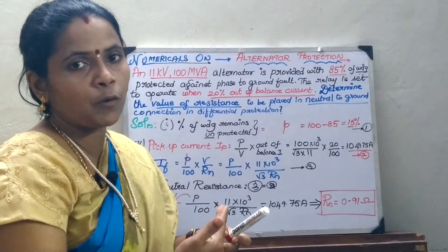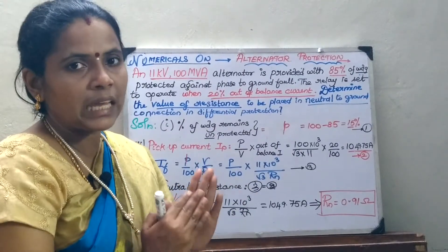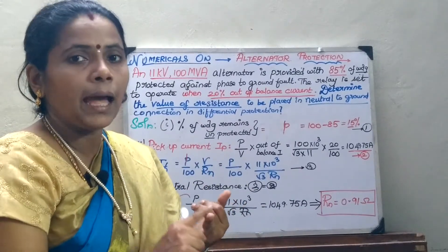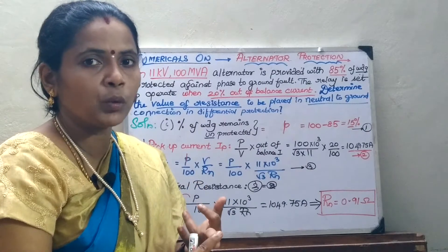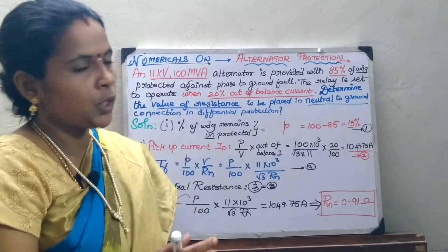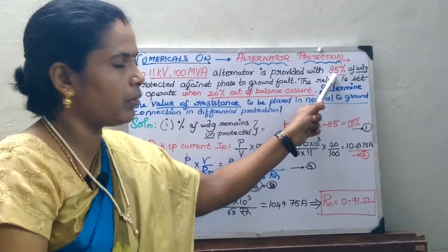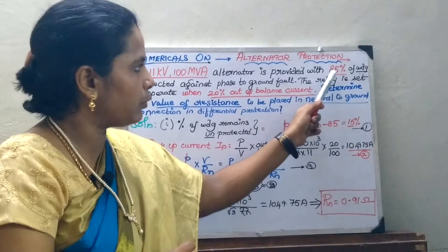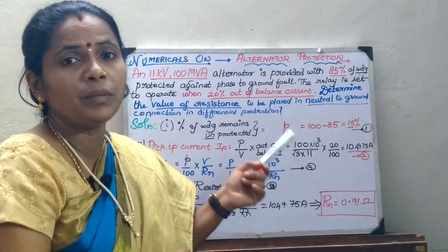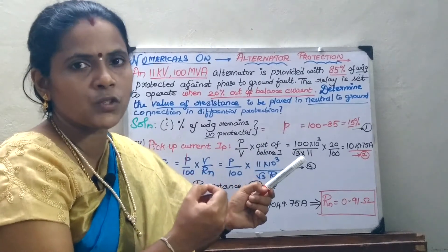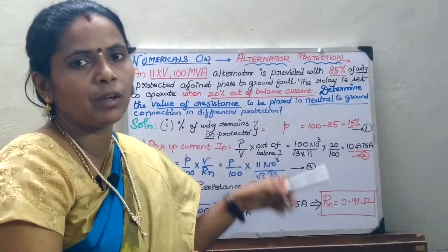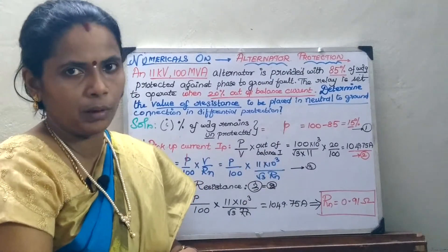The difference between the previous problem and this problem is: same rating of the alternator, but in the previous problem they gave the CT ratio and the out-of-balance current, and asked us to compute the percentage of the winding protected. Whereas here that value — 100 minus P — is given, and we are asked to calculate Rn. In the previous problem, the alternator was grounded through a neutral resistance of 5 ohms. So only the variables and parameters are changing.